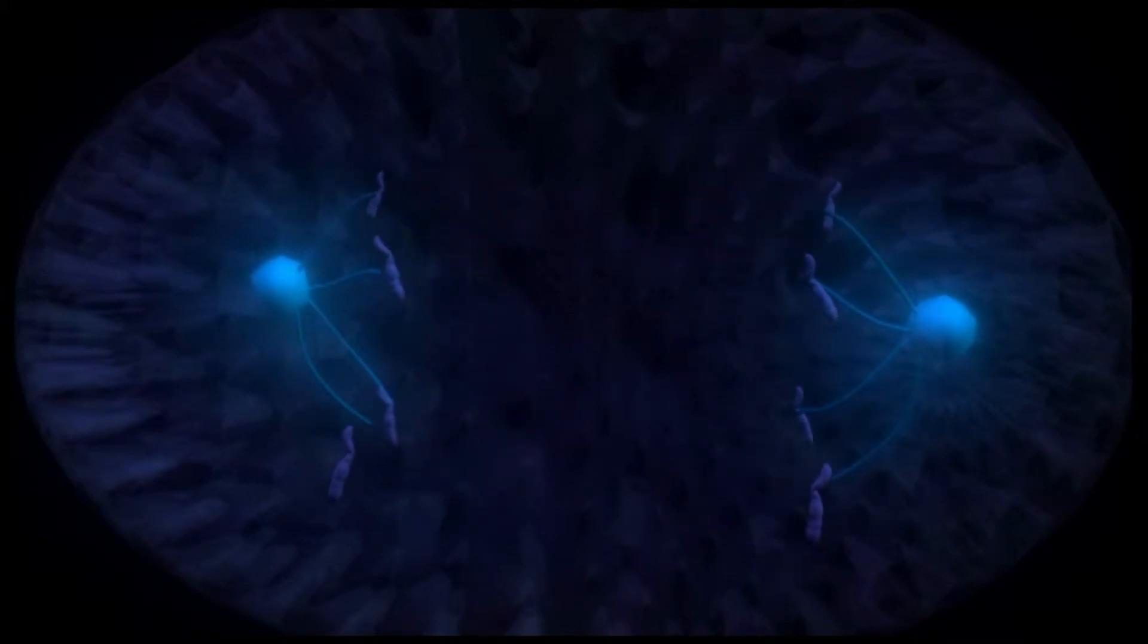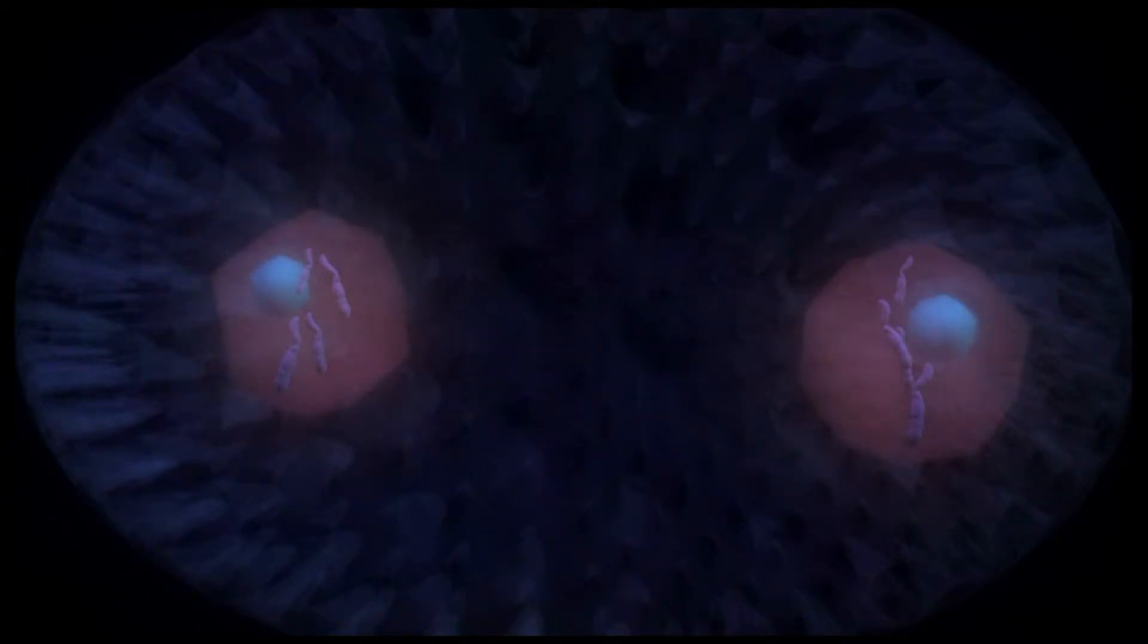In the fourth and final phase in mitosis, telophase, the chromosomes reach the opposite end of the cell and develop a new nuclear envelope around the chromosomes. It is now when the chromosomes uncoil and the spindle vanishes.